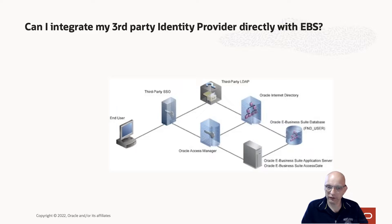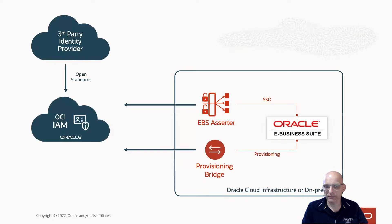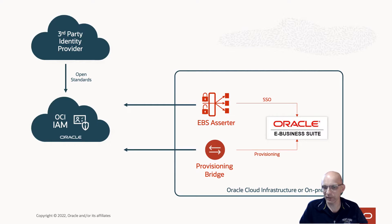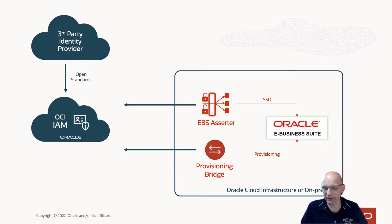So what does that look like with OCI IAM? It's exactly the same. We don't support direct integration from third-party identity providers because EBS Suite doesn't support the standards. The integration pattern with OCI IAM is: integrate eBusiness Suite through the Assertor and Provisioning Bridge with OCI IAM, and then integrate OCI IAM with your third-party provider using open standards — whether that's SAML-based or OpenID Connect-based integration. And because OCI IAM also supports standards like SCIM, you can automate user management from that third-party provider, so you're not separately managing users within OCI IAM.